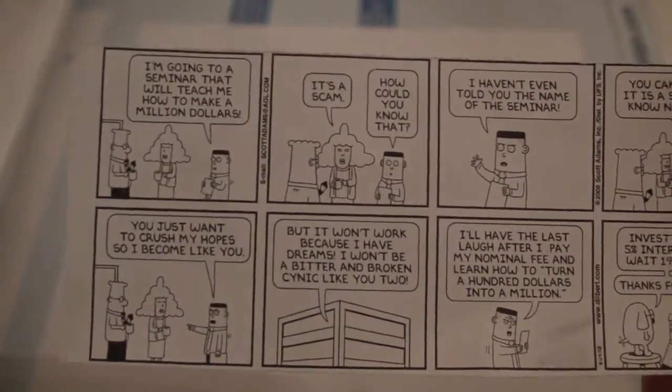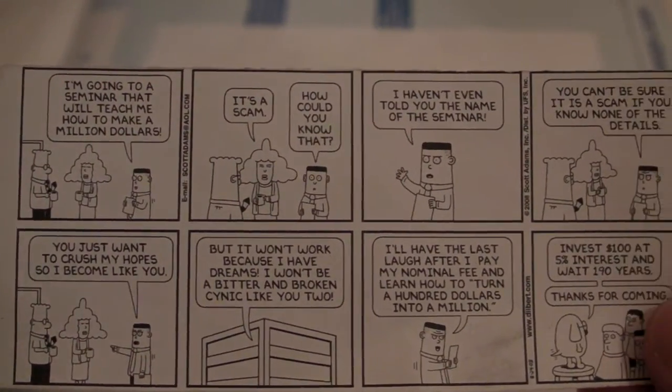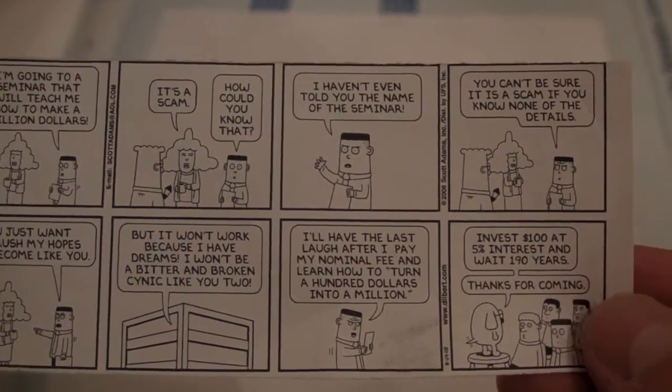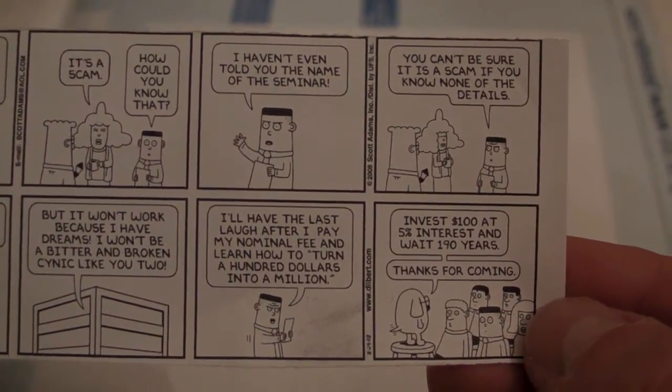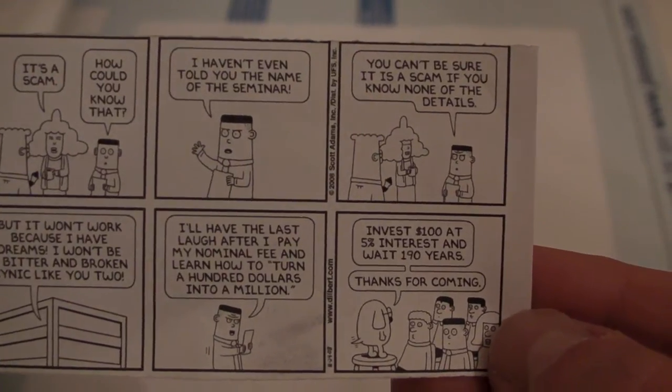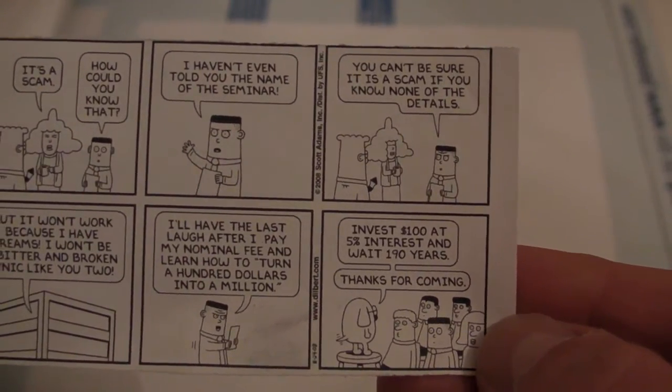Okay, I was most amused by this cartoon clip that someone gave me of Dilbert a little while ago, where Dilbert's colleague gets scammed into going to a seminar that teaches him how to make a million dollars, basically by investing $100 at 5% and waiting for 190 years.